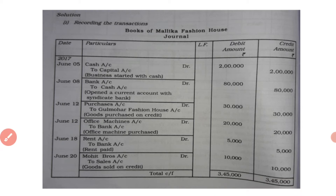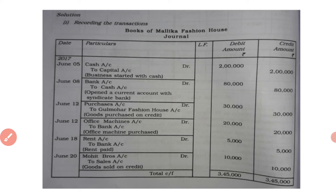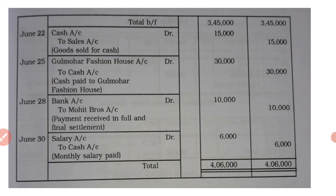When the page is completed, while continuing to the next page, you have to write 'Total CF' — CF means carry forward — and write the total amount of that page, which is 3,45,000. On the next page, you start by writing 'Total BF' — BF means brought forward — which is carried forward from the previous page.